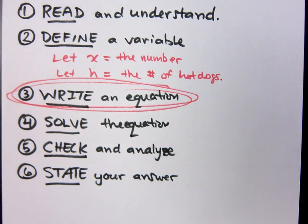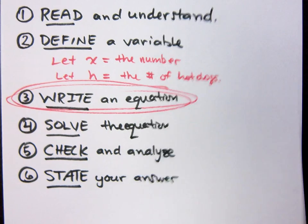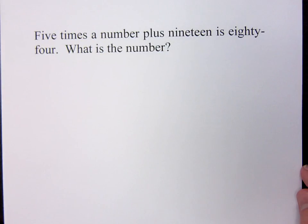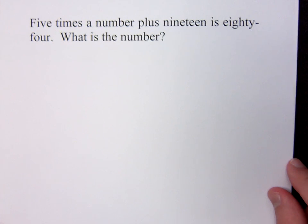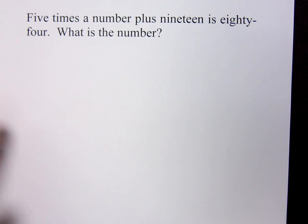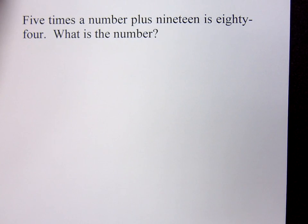So the first example that I want to go over with you is the first example that you see on that handout that I gave you. It says, what are problems number one? And so this says that 5 times the number plus 19 is 84. What is the number? Do I need to draw a picture or a diagram? Is there anything super special about this guy? No, I'm just looking for a number.